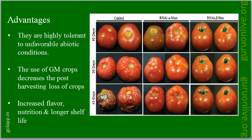GM crops also increase flavor, nutrition, and longer shelf life. For example, a normal tomato after 10 days is in good condition, but after 20 days this is the condition of a normal tomato, whereas a GM crop after 20 days is also still in good condition.